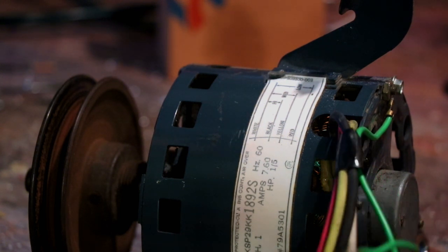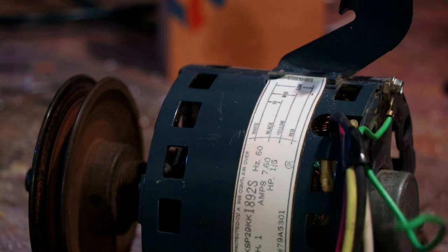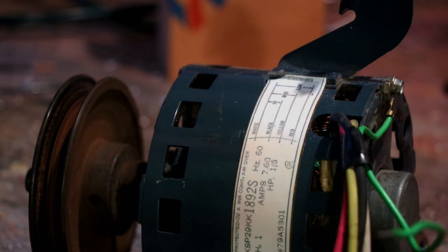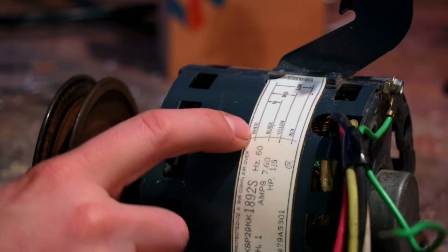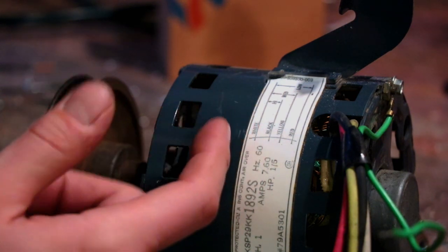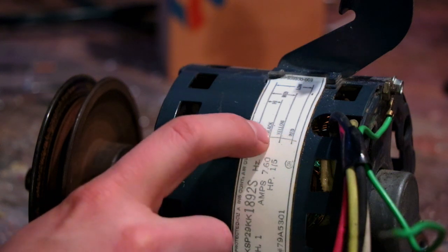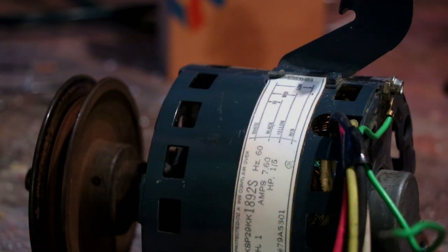So to wire this thing up, I could actually just wire one speed at a time. To do that you would just wire, say you want to only run high speed, you would wire your white to white neutral from the line and then you would wire your hot wire from the line to black and you'd have high speed only and you'd just cap your other two wires.